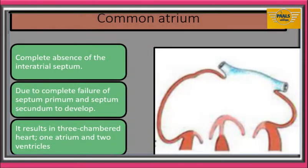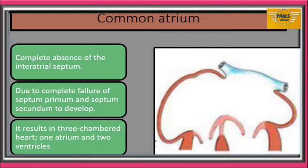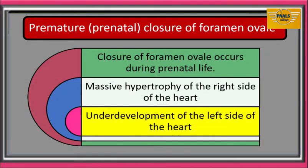Common atrium is caused by the failure of septum primum and septum secundum to develop. It is the most serious congenital anomaly of the atrium and is always associated with other defects of the heart, resulting in formation of a three-chambered heart — that is, one atrium and two ventricles. In premature closure of foramen ovale, the closure of foramen ovale occurs during prenatal life.